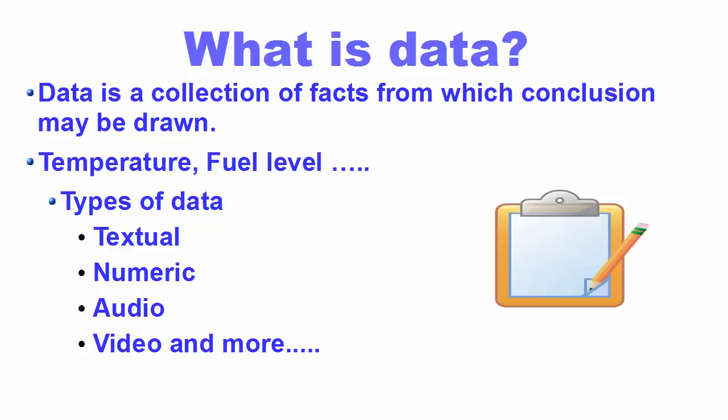Before understanding what a data structure is, we need to understand what data is. Data is a collection of facts from which you can draw any conclusion. For example, if the temperature of the room is 40 degrees Celsius you can say it's hot weather, or if the fuel level in the car is 5% you can say it's very low and you need to fill your tank. Temperature or fuel level is the data from which you draw these conclusions.